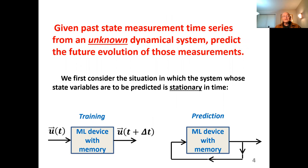To begin, I want to talk about this situation: given past state measurement time series from an unknown dynamical system, predict the future evolution of those measurements. We first consider the situation where the system is stationary in time, producing a vector u(t) where the elements are the different measurements. We have a long time series of past evolution, and we train the machine learning device so that when you put in u(t), you get out an approximation of u(t + Δt).